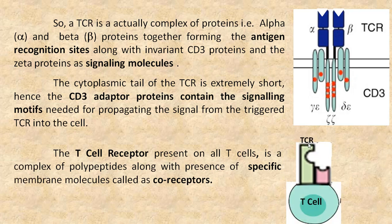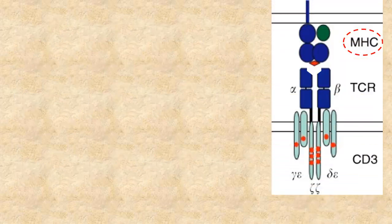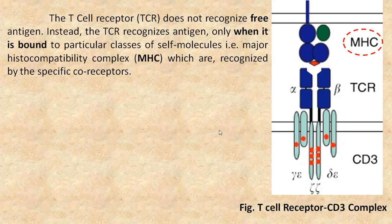The T cell receptor present on T cells is a complex of polypeptides along with specific membrane proteins called coreceptors. The T cell receptor does not recognize free antigen — it recognizes antigen only when it is bound to particular classes of self molecules, that is, major histocompatibility complex molecules, which are recognized by specific coreceptors.